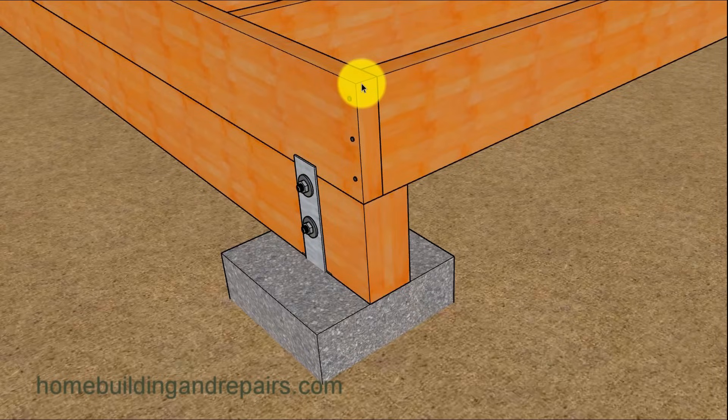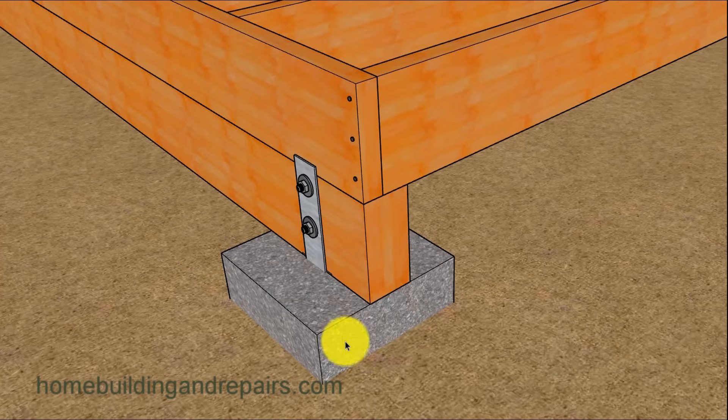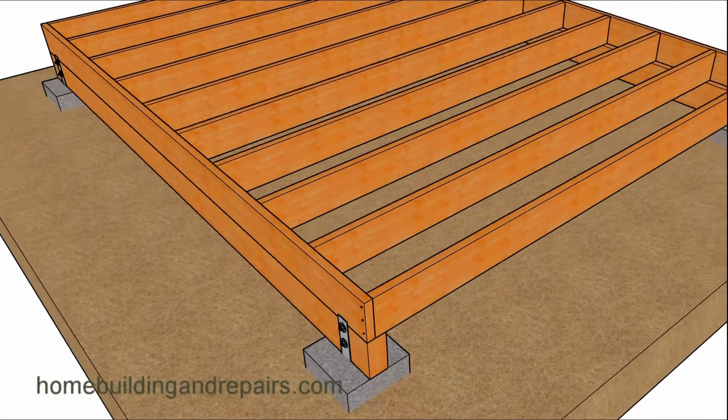So this example here, the rim joist would attach to the top of the beam. Same footing. All of the footings in this video are going to be 12x12 and then 12 inches into the ground with a 4 inch or a 6 inch tall concrete base protruding from the top of the ground.